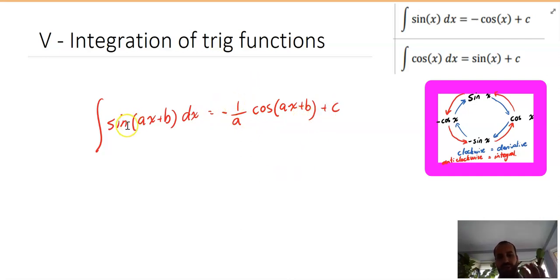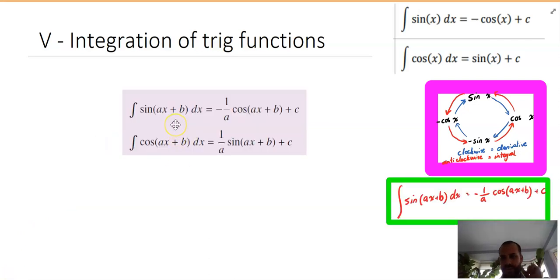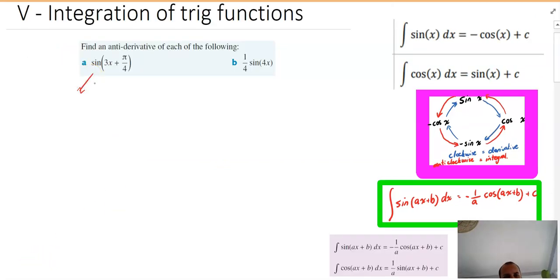If that was unclear come and talk to me but that should look very familiar now. It happened when we were talking about logs, it happened when we were talking about exponentials, we sort of talked about reverse chain rule, this is the same kind of deal, this one over a keeps appearing all over the place. Stole that out of your textbook, that's an even better way of thinking about what I'm doing. Sine of ax plus b is negative one on a cos, and cos ax plus b is one on a sine. Write that down.